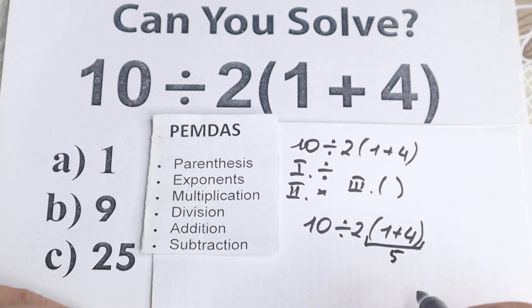So our parentheses give us 5. So I just wanted to rewrite this problem. So 10 divided by 2 and times 5. What is the next step?